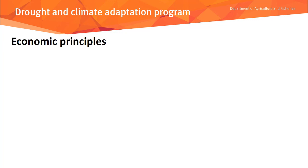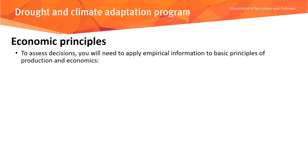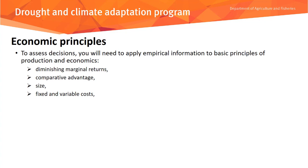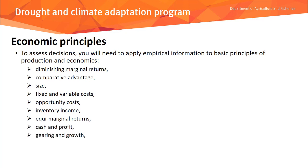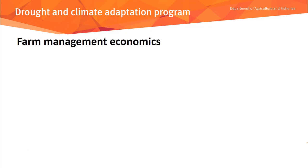The economic principles that need to be considered in this decision-making framework require applying empirical information — information that's correctly gathered — to basic principles of production and economics. These include things like diminishing marginal returns, comparative advantage, size, fixed and variable costs, opportunity costs, inventory income, equimarginal returns, cash and profit, gearing and growth, risk, valuation of benefits and costs, and time. That's a short list, but there's more than that.